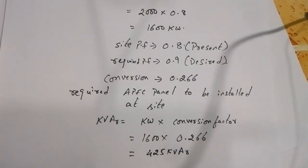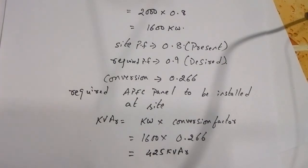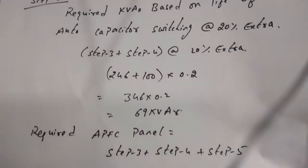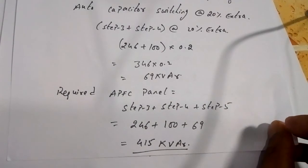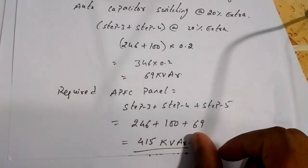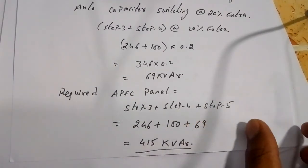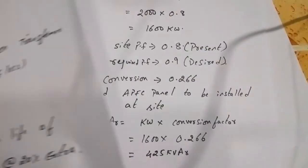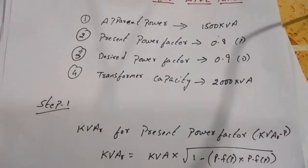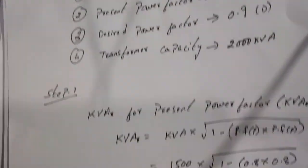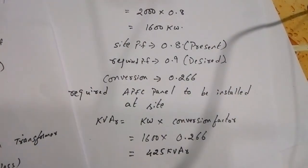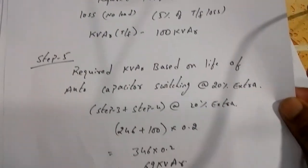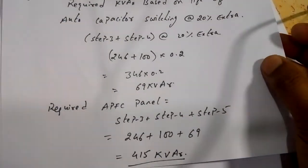This is a simple step. In an earlier video, using the step-by-step procedure, we got 415 kVAR, so it will be more or less the same. I suggest you go with the step-by-step procedure in my earlier video. This is my earlier video — note the steps: step 1, step 2, step 3, step 4, and step 5 — which will give the exact value.